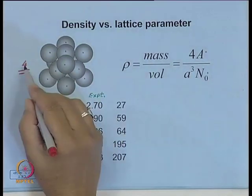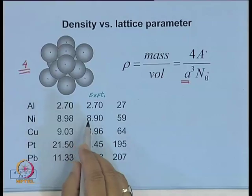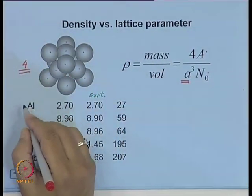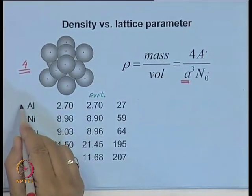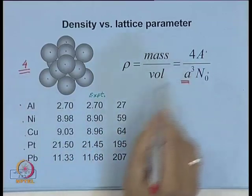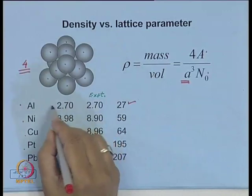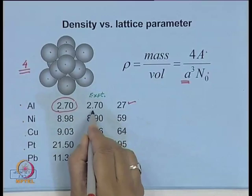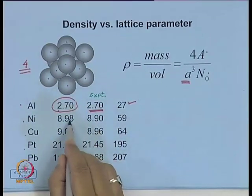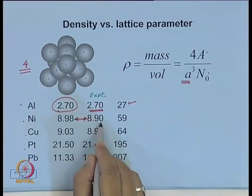The mass of one atom equals its atomic weight divided by Avogadro's number. For four atoms per unit cell, the mass is 4A/N, divided by the volume of the unit cell. Repeating this calculation for several FCC elements — aluminum, nickel, copper, platinum, and lead — for aluminum with atomic weight 27, the calculated density is 2.7, which matches the experimentally determined density. Similarly for nickel, the theoretically calculated density matches the experimental result very well.